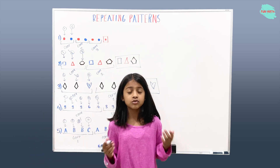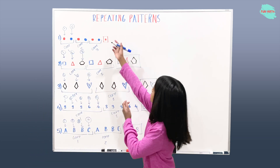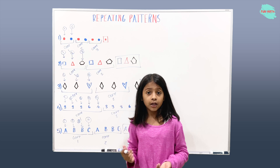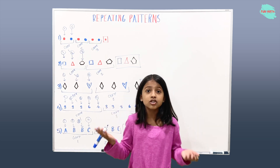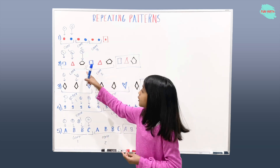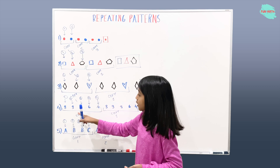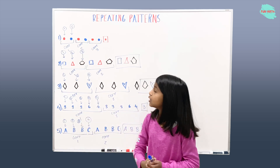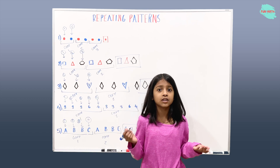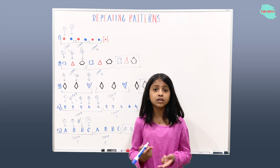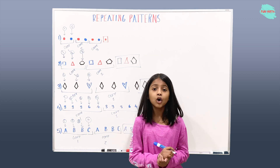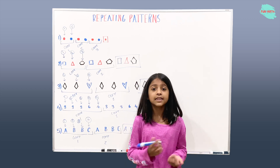All right, so now let's review what we learned today. We learned about repeating patterns. We had five examples to understand repeating patterns, and patterns are everywhere around you. Patterns can be in colors, shapes, numbers, and letters. The important thing for finding repeating patterns is the core or the rule — if you find the core, it's easier to solve your pattern. I hope you learned something from this video. Thanks for watching. Bye.